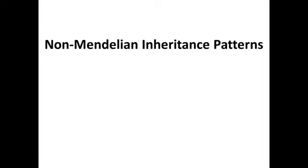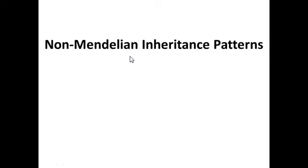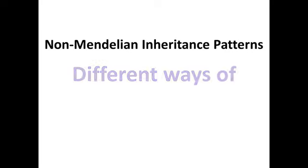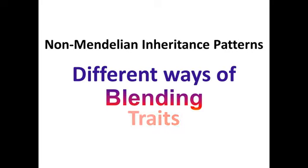If you remember Mendel, which is where the phrase Mendelian comes from — this is from Gregor Mendel's name — in Mendelian genetics, everything was either-or. In non-Mendelian inheritance patterns, a lot of what we're going to look at is ways in which traits are blended, because not everything inherited follows that either-or pattern. We know lots of examples such as hair color, skin color, and height that are more of a blending type of inheritance.